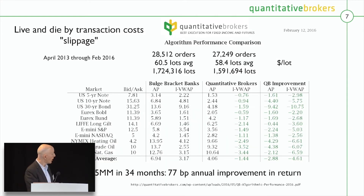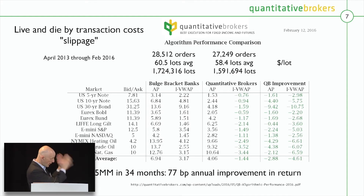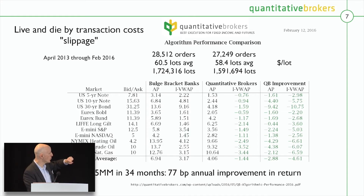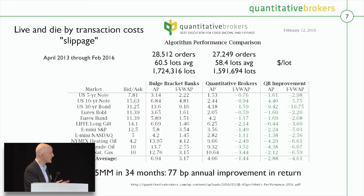From a study we did a couple years ago — what we live or die by is the slippage numbers of execution price relative to benchmark. This is a study for a client showing our algos compared to their other algos from other brokers. The green numbers on the right show we're saving them money — those are dollars per lot executed, which are fractions like a quarter or a fifth of the bid-offer spread. For this fund, those small differences added up to $9.5 million across three years, an improved return of 77 basis points. These tiny differences really add up for firms that trade a lot.